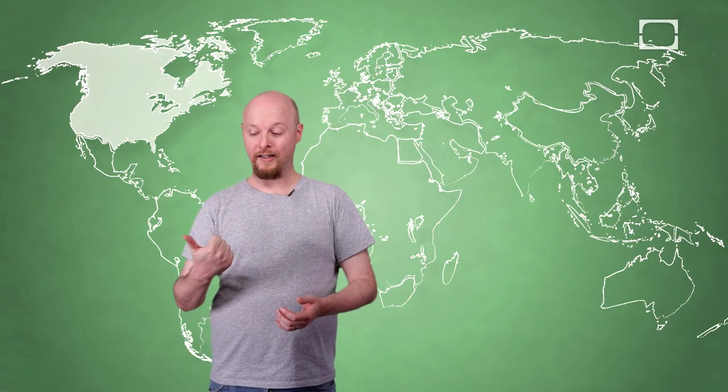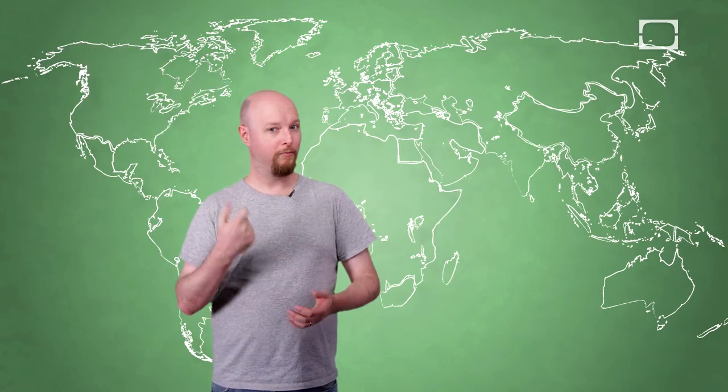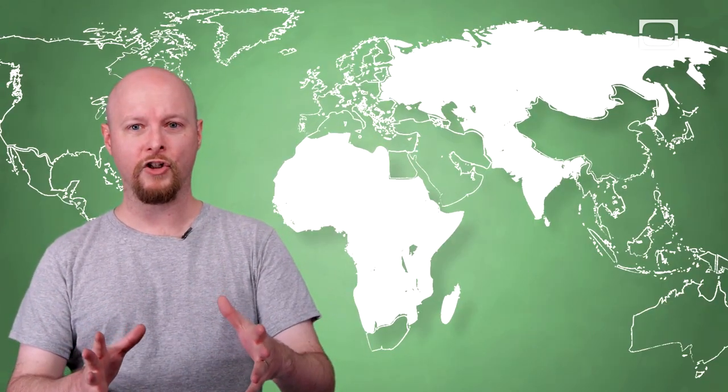So what are the regions? Well, region one is the United States and Canada. Region two is Europe and Japan. Region three is Southeast Asia. Region four would be Latin America and Australia. Region five is Russia, the rest of Asia and Africa. And region six is China.